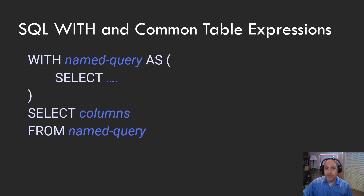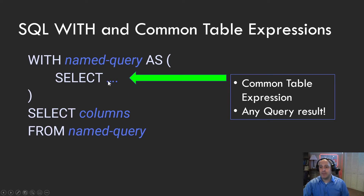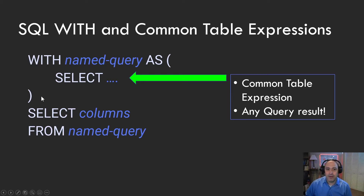The general syntax of WITH is that you say WITH, and then the name of the query. Inside the parentheses is your SELECT statement, which is your common table expression. This could be any query that returns a result set. That named query is treated as a table in the final SELECT statement that you write underneath the WITH statement. And you can have several named queries in the WITH statement, as we will demonstrate in the hands-on part of the video.